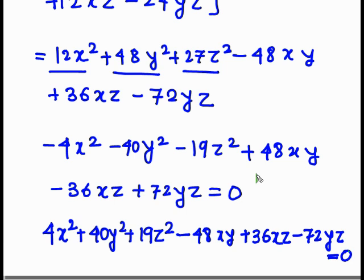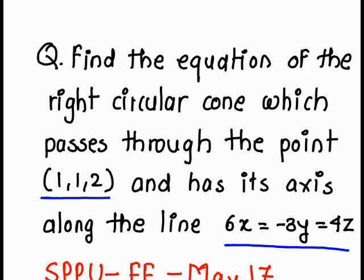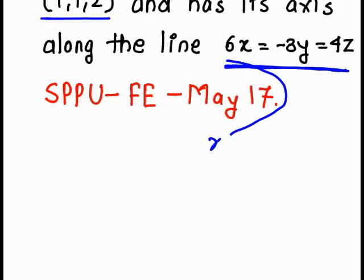Hope you understand and have gained clear knowledge about the right circular cone. Now let's see how to generate a new problem from this. You can add a single line stating that the vertex is at the origin to write a new question. Also, if you replace the axis equation with x/(−2) = y/4 = z/(−3), you can write another new question. Likewise, you can generate different types of questions once you understand the concept.